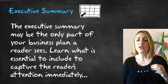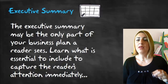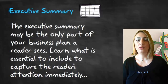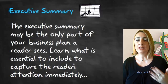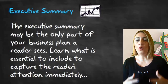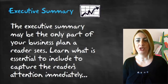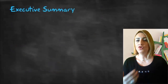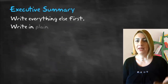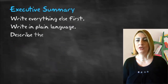The executive summary may be the only part of your plan that a reader will see. This is why you need to include all the right information in order to make it appealing. You should write everything else first, and write it in plain language.